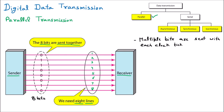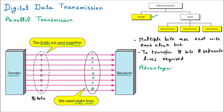One more conclusion: to transfer eight bits, eight separate lines are required. To send 20 bits, you need 20 lines. Now moving to the advantages of parallel communication — the first and foremost advantage is high speed. Because you have multiple lines all transferring data simultaneously, the speed is very high. That is the main advantage of parallel communication.